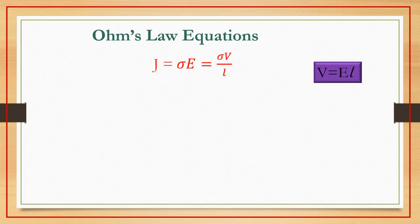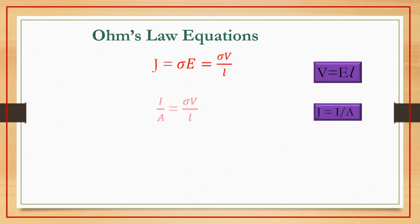So J will be sigma V by L. But J is the current density, current by unit area. So I by A equals sigma V by L.